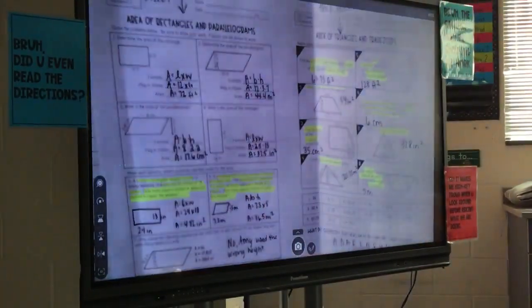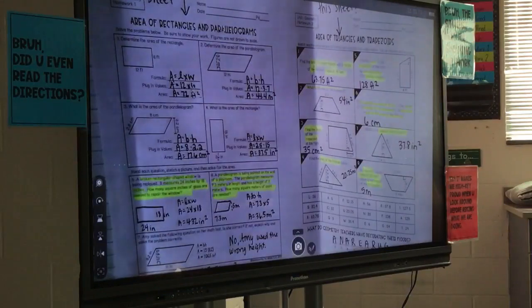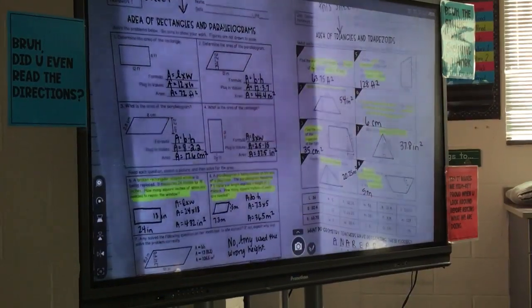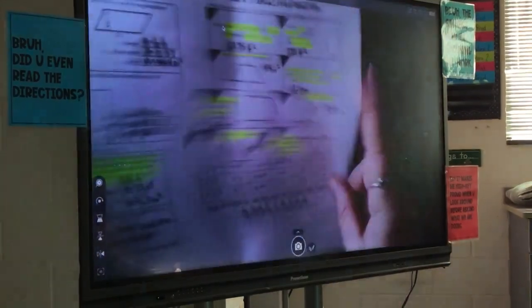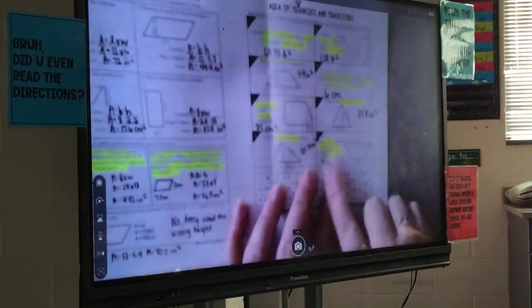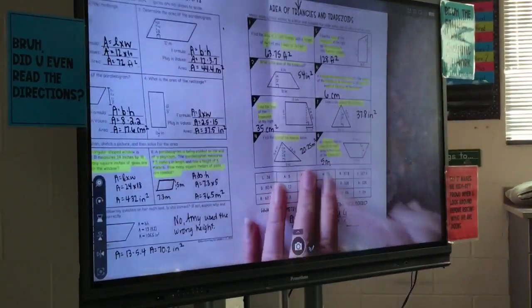Are there any questions that you guys want to go over before we get started from either one of these pages? Number eight on the right side. All right, so it says a trapezoid has an area of 35 millimeters. What is the height of the trapezoid? Your answer for this one should be five.